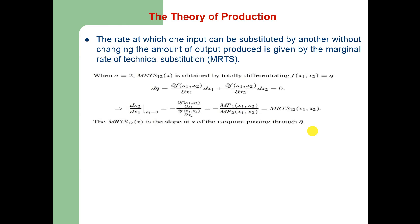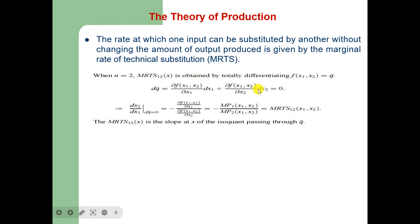When the number of goods is equal to 2, the MRTS — that is, marginal rate of technical substitution of input 1 for input 2 — is obtained by taking the total differential of the production function. The total differential of q-naught equals the marginal product of input 1 times dx1 plus marginal productivity of x2 times dx2, and that equals 0. Along the same isoquant there is no change in output, which is why dq = 0. Simplifying, we find that MRTS between input 1 and input 2 is the slope of the isoquant at point x passing through q-naught.